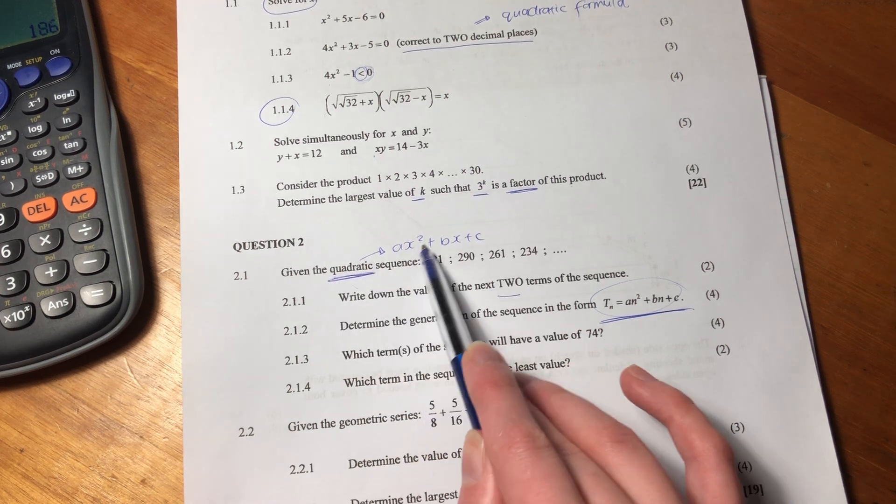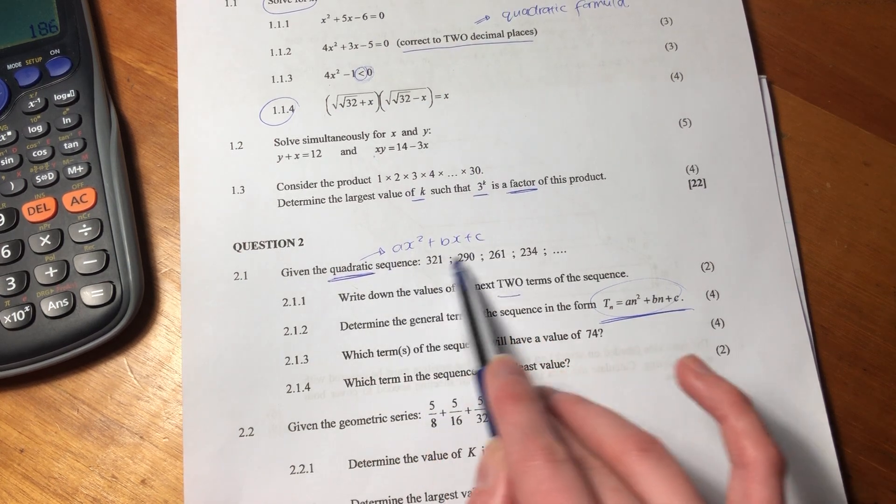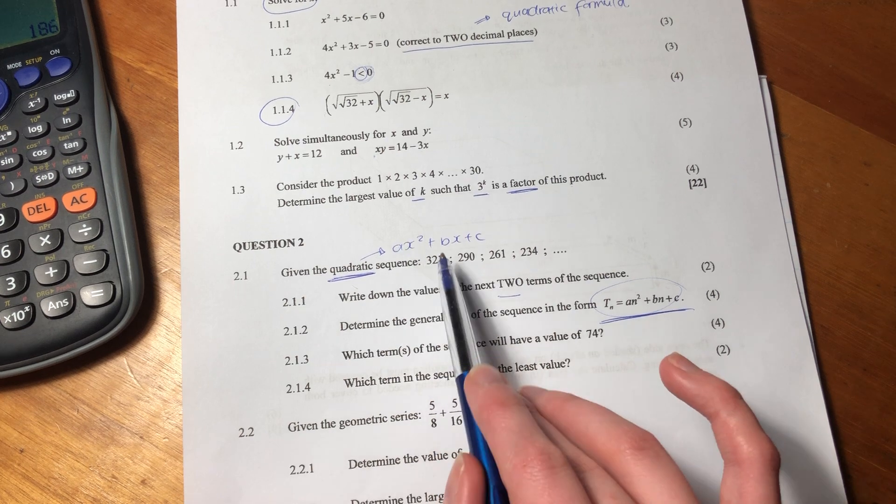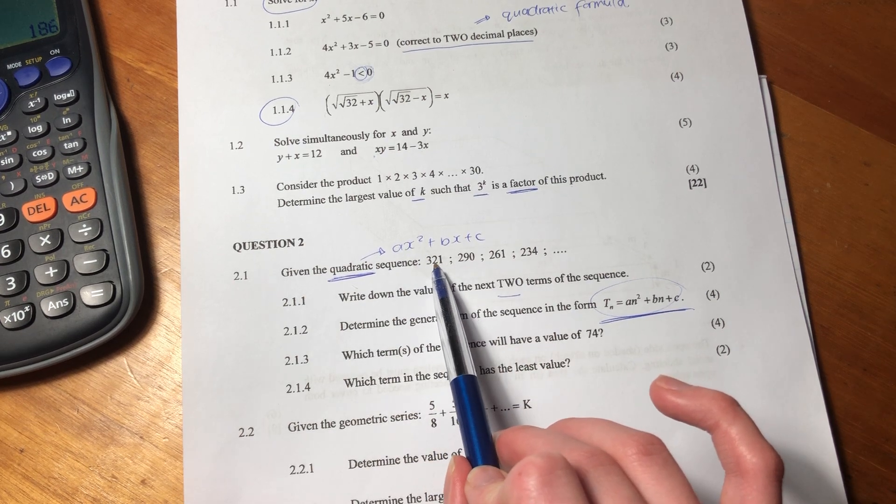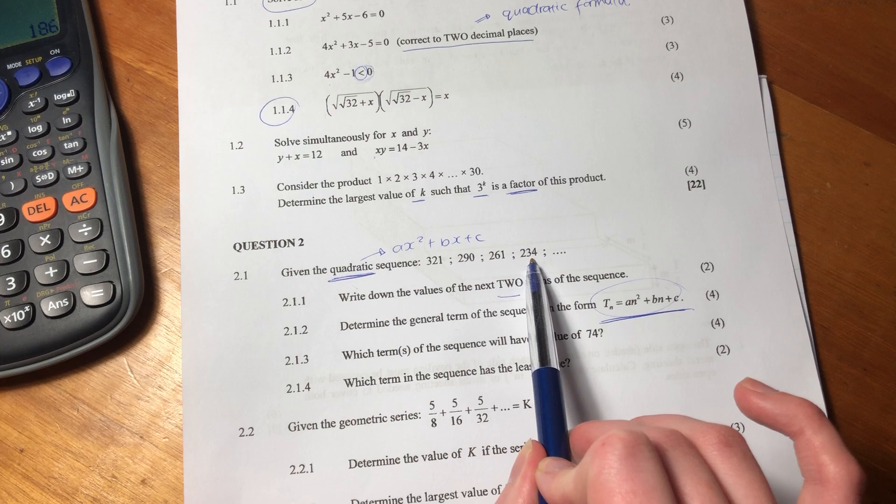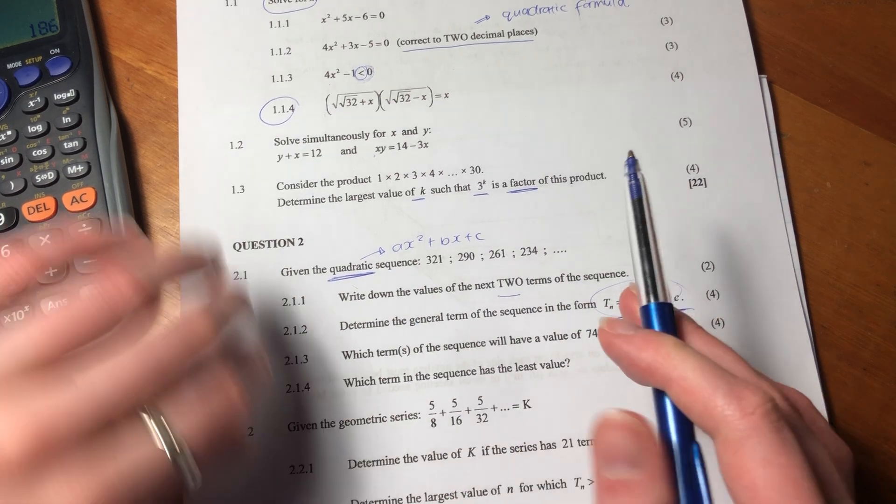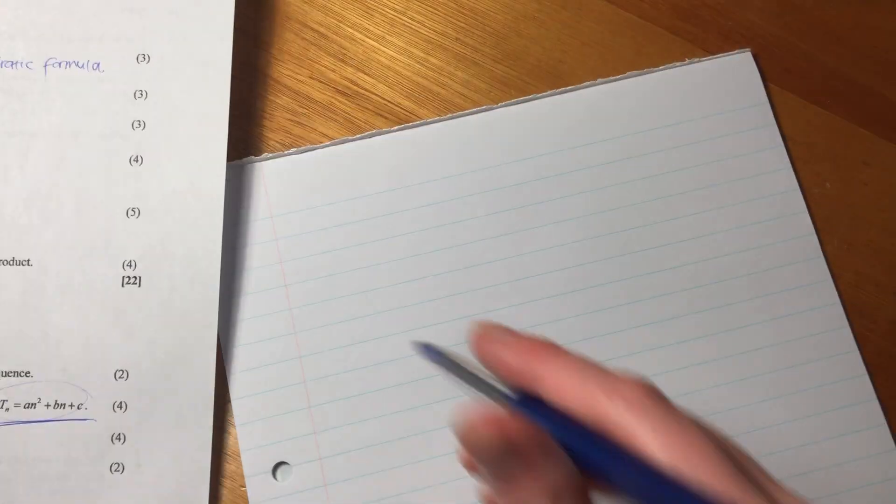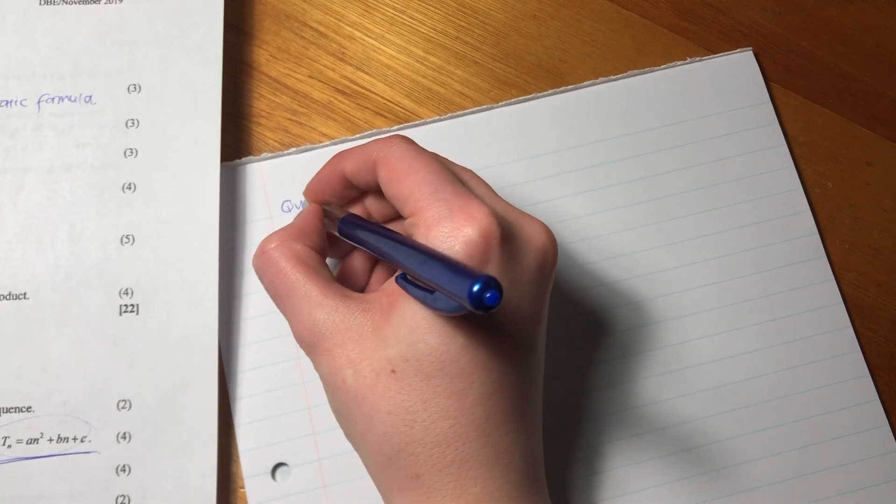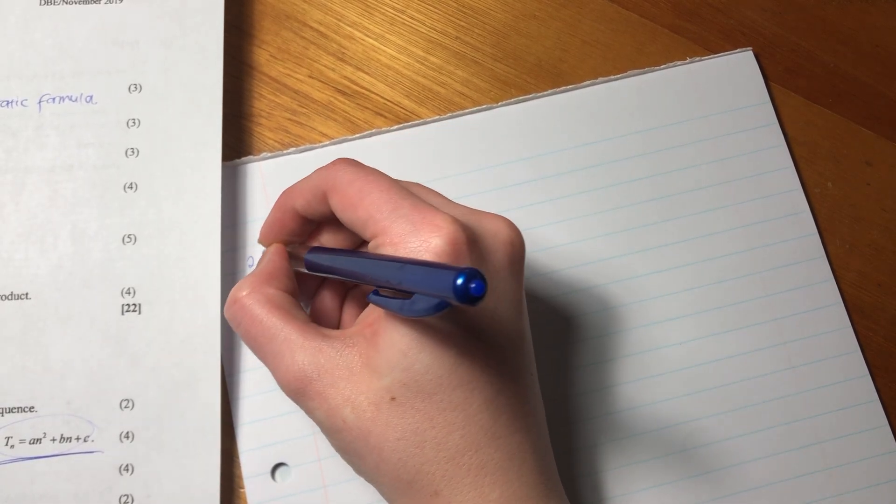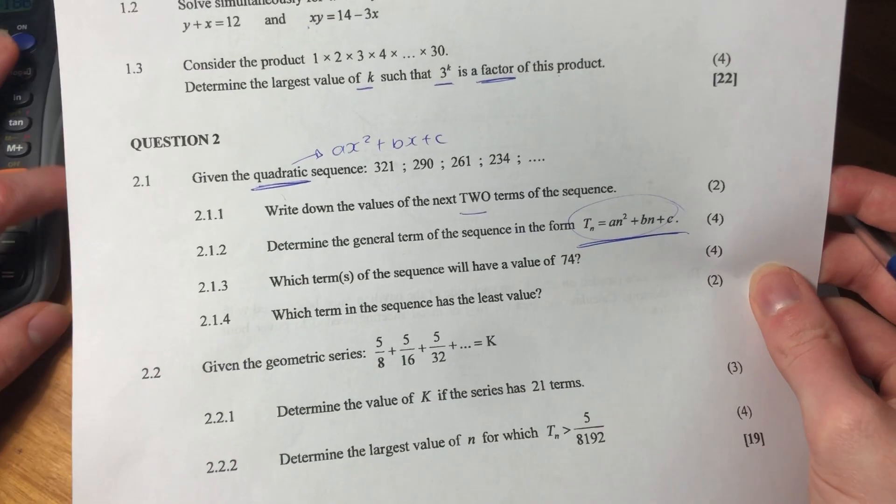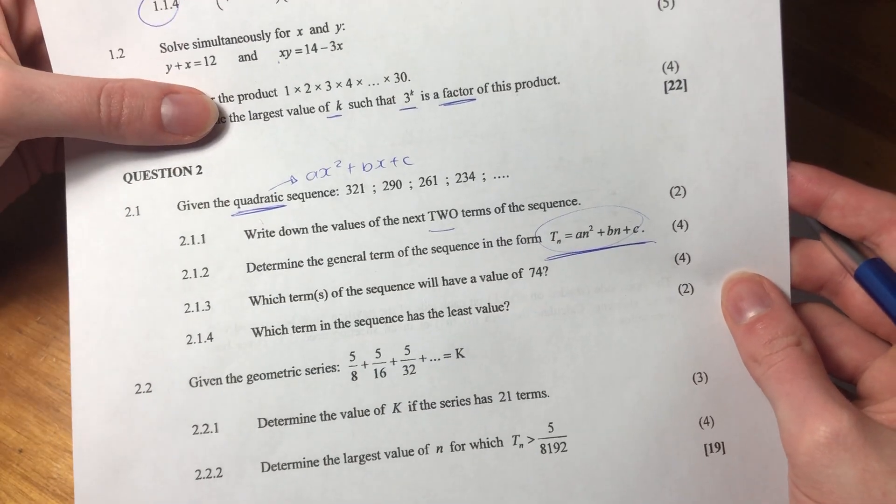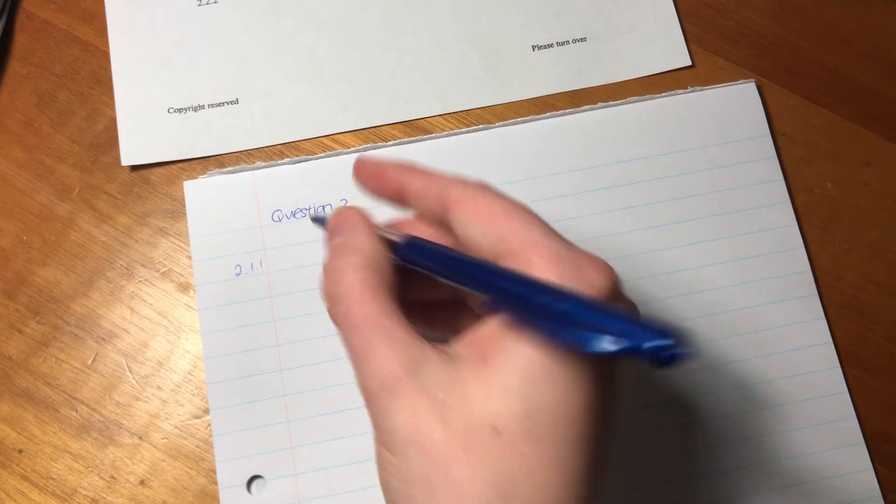now I've written the general form of a quadratic sequence. This is not something that I can explain to you. This is what you have to know. Quadratic, the word quadratic means that the general form has an x squared in it. Then they've given us the first few terms of the sequence.